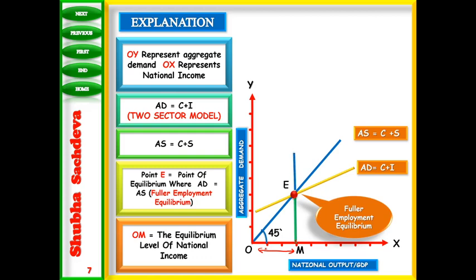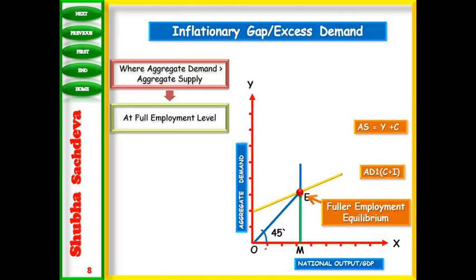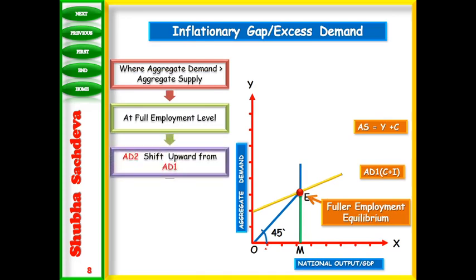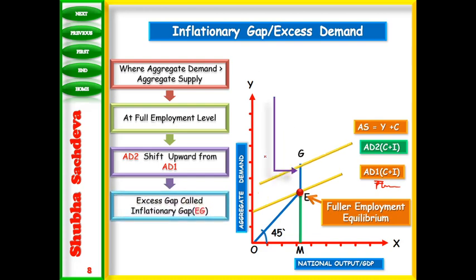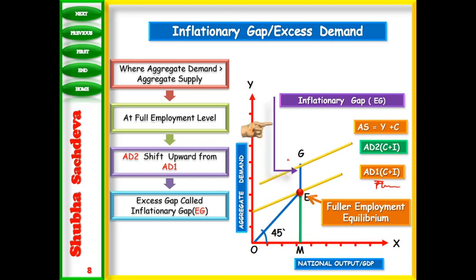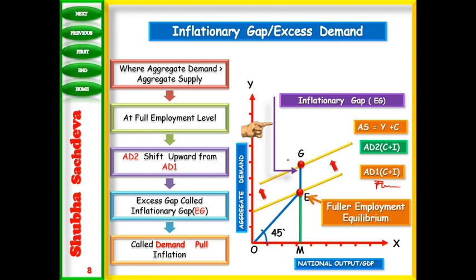Now let us discuss the problem of excess demand — when aggregate demand is greater than aggregate supply at full employment level. The required (planned) demand is one level, but the actual demand, AD2, is higher. This gap between actual and required demand is known as demand-pull inflation, meaning inflation is caused by excess demand and prices have to rise.